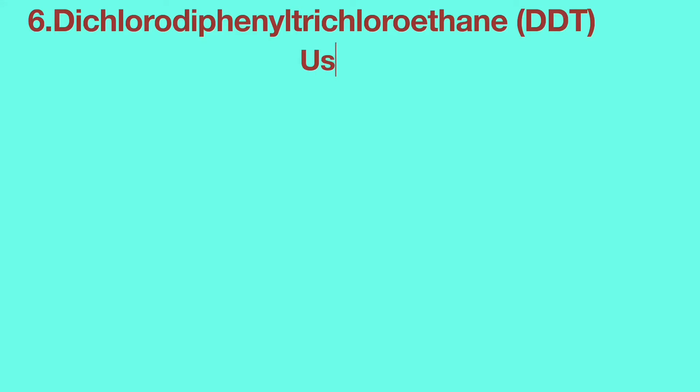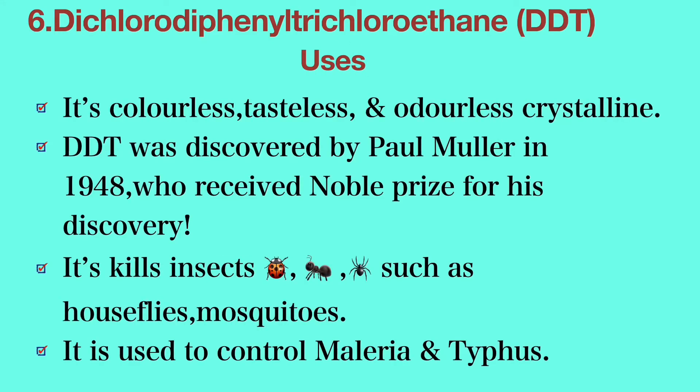The last compound is dichloro-diphenyl-trichloroethane, generally known as DDT. It is a colorless, tasteless, and odorless crystalline compound. DDT was discovered by Paul Müller in 1948, who received a Nobel Prize for this discovery. It kills insects such as house flies and mosquitoes, and is used to control malaria and typhoid.